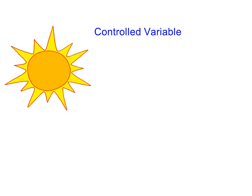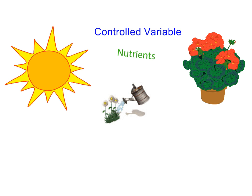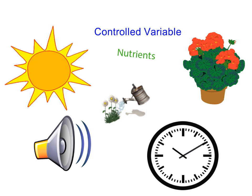Next, we have controlled variables, and these are everything we want to keep the same. In this experiment, what are the things we would want to keep the same? They could be the amount of light, the amount of water, the type of nutrients used, the species of plants we choose, the volume of music, and the amount of time we play music for the plants. These are all examples of the controlled variables. If we don't control all the variables, then we can never know if we actually show that the independent variable is responsible for the results.